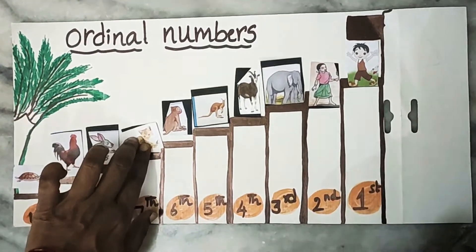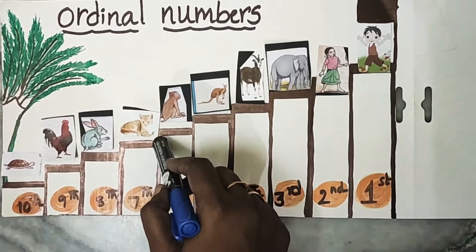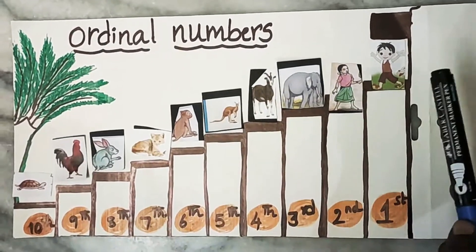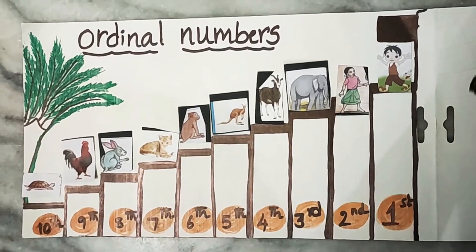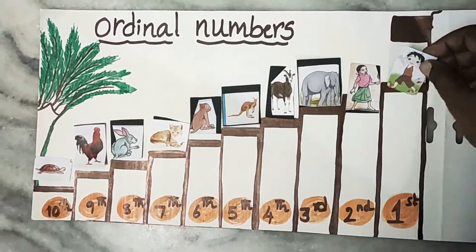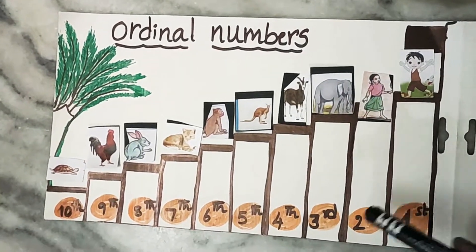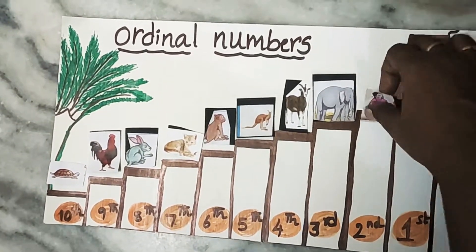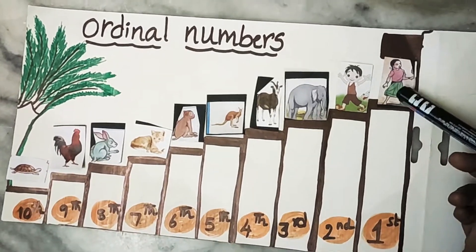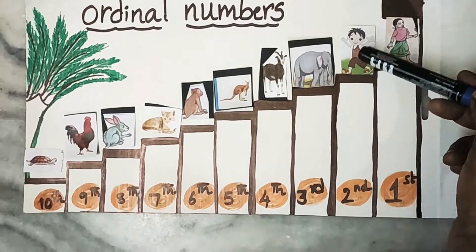Children, all these animals and a boy and girl like to win the race, so they are running one by one. But one person won 1st place — who is that? Boy. Boy won 1st place. And who won 2nd place? Girl. And we can change if you feel that girl should be in 1st place, we can change. So now who is in 1st place? Girl. And who is in 2nd place? Boy.